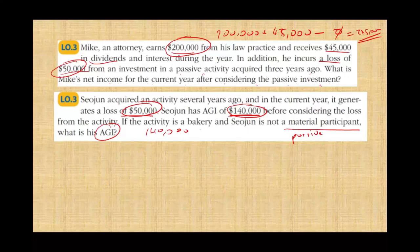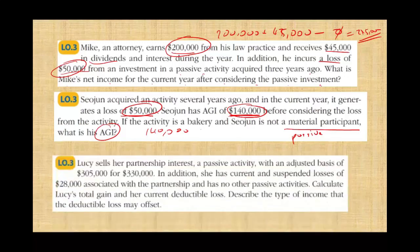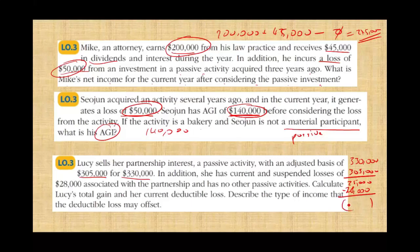Example: Lucy sells her partnership interest — a passive activity — with an adjusted basis of $305,000 for $330,000, giving a gain of $25,000. She has current and suspended losses of $28,000. Applying the suspended losses against the $25,000 gain leaves $3,000 of excess losses. Assuming she has no other passive activities, this $3,000 can reduce her active income and portfolio income.